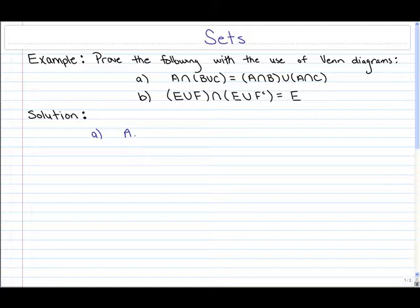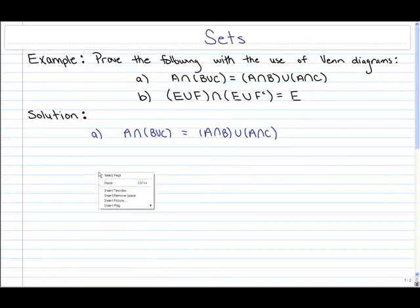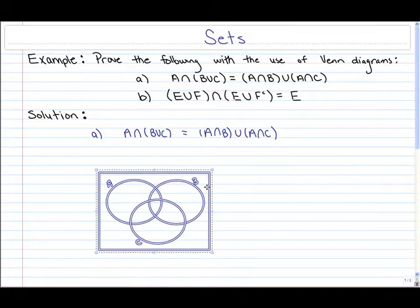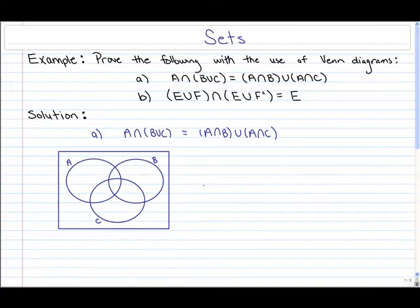For part A we want to show that A intersect (B union C) is exactly equal to (A intersect B) union (A intersect C). Venn diagrams can help us visualize this. A Venn diagram showing all three sets would look like this, labeled A, B, and C. The first thing we want to do is figure out the left hand side and what shaded region that represents.